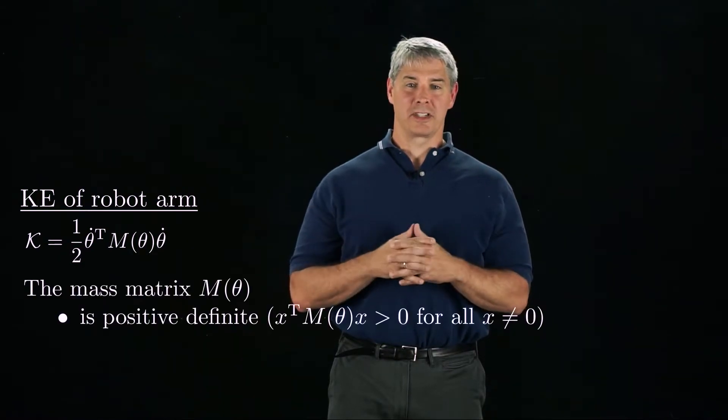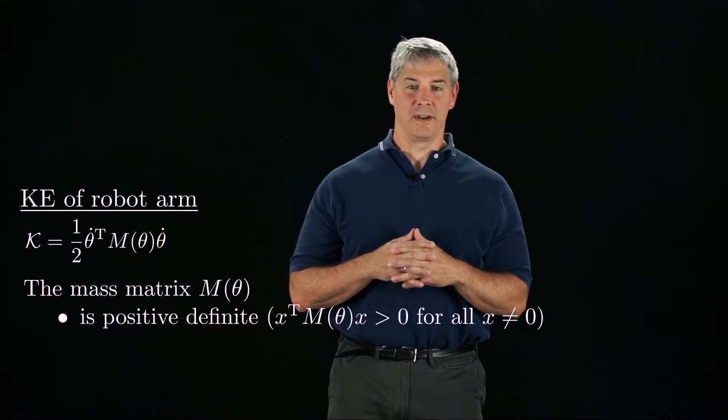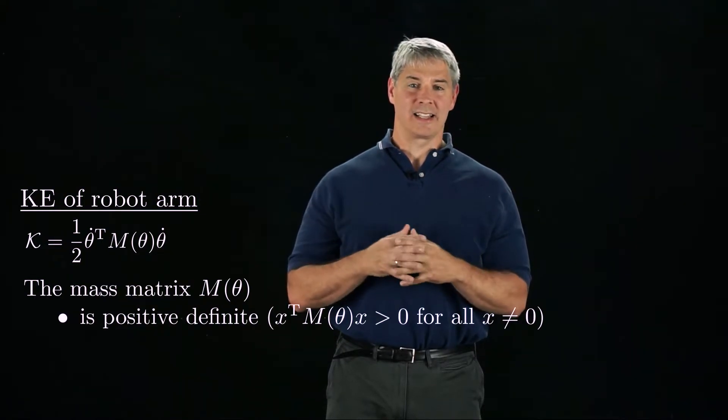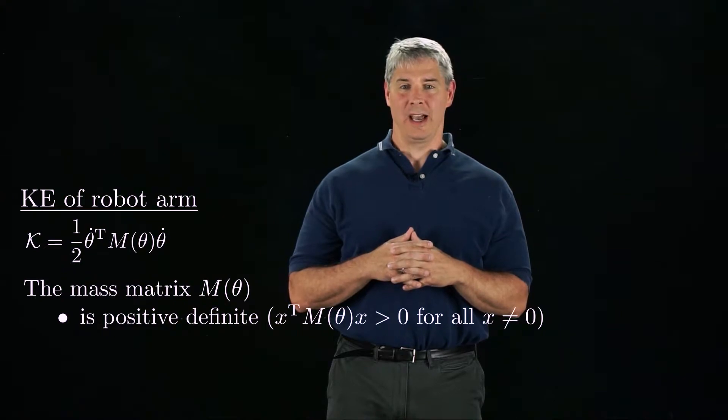The mass matrix is positive definite, meaning that the kinetic energy is positive for any non-zero joint velocity vector. This is analogous to the fact that a point mass can only have positive mass.